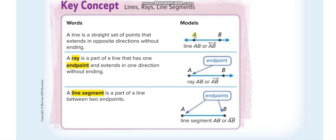A line is a straight set of points that extend in opposite directions without ending — a line never ends. Whenever you see a line extending on both sides, the arrows represent that the line is extending. You can see it is extending toward the right and toward the left.